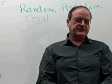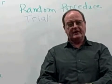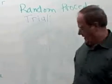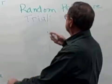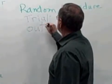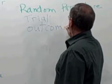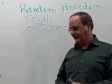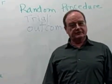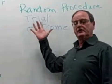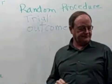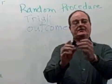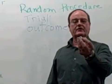Back to my cards — one instance of a trial here would be choosing at random one of the cards. Next term: outcome. When we talk about an outcome in probability, we're talking about the results, or at least one of the results, of a trial.